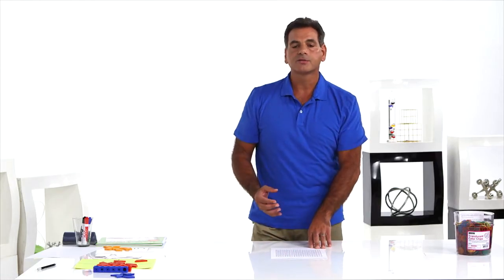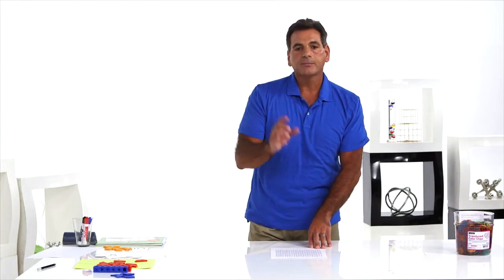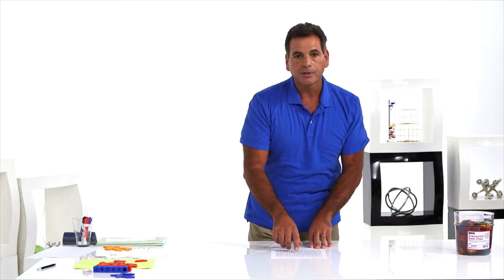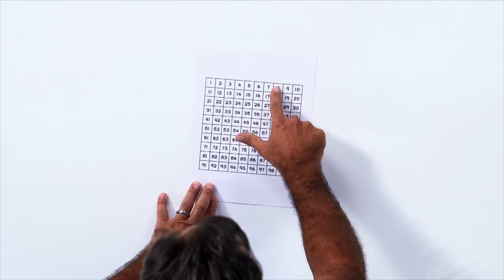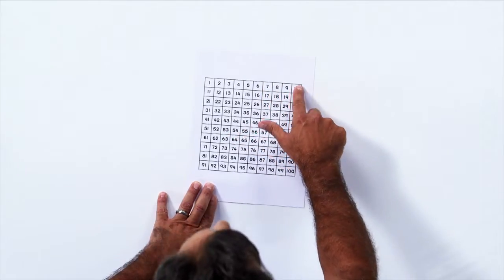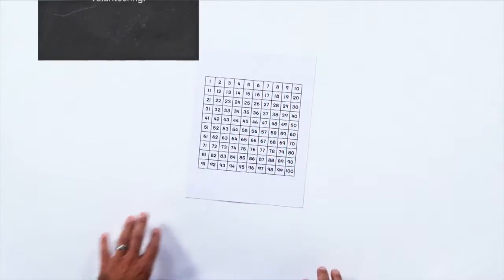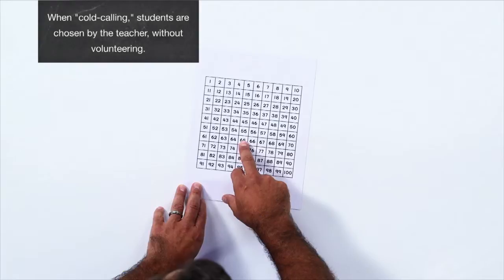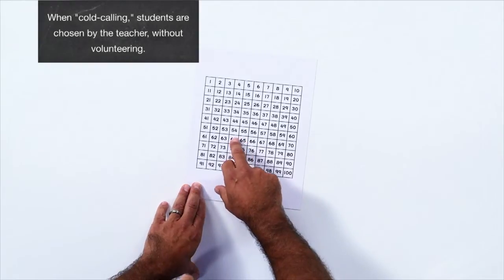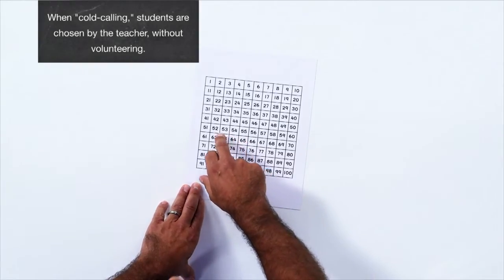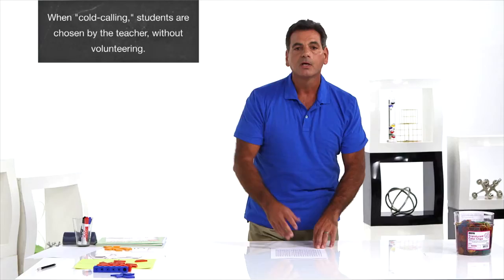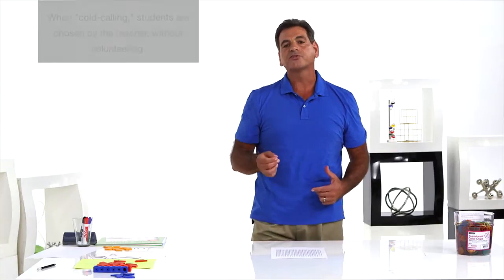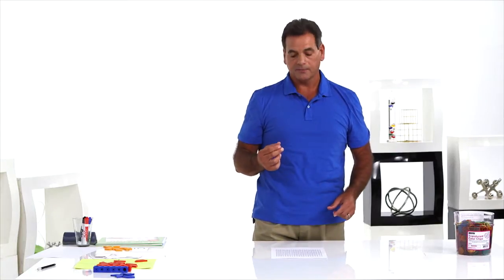Cold call kids. 'Anna Maria, start on 7 and give me 3 more.' 7, 8, 9, 10 — pointing all the time. 'Start at 65, Billy, and give me 3 less.' 64, 63, 62. Constant counting like that.